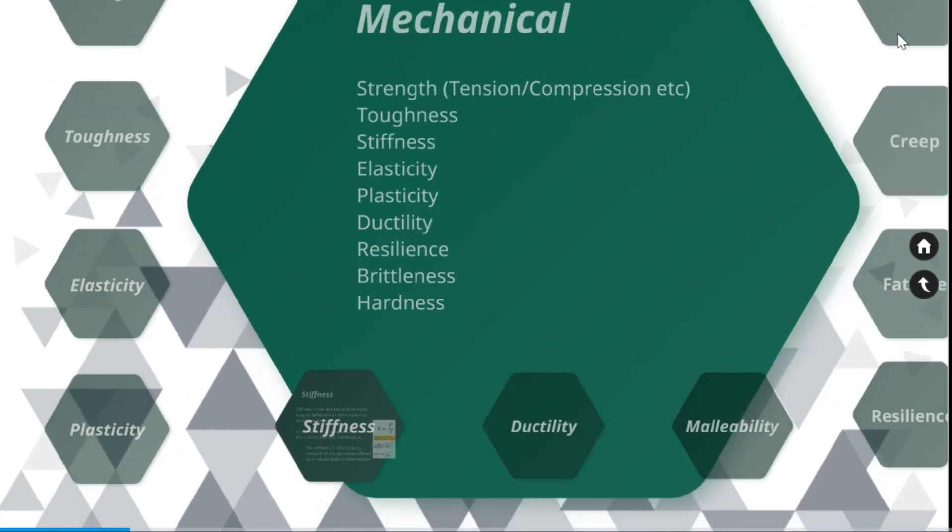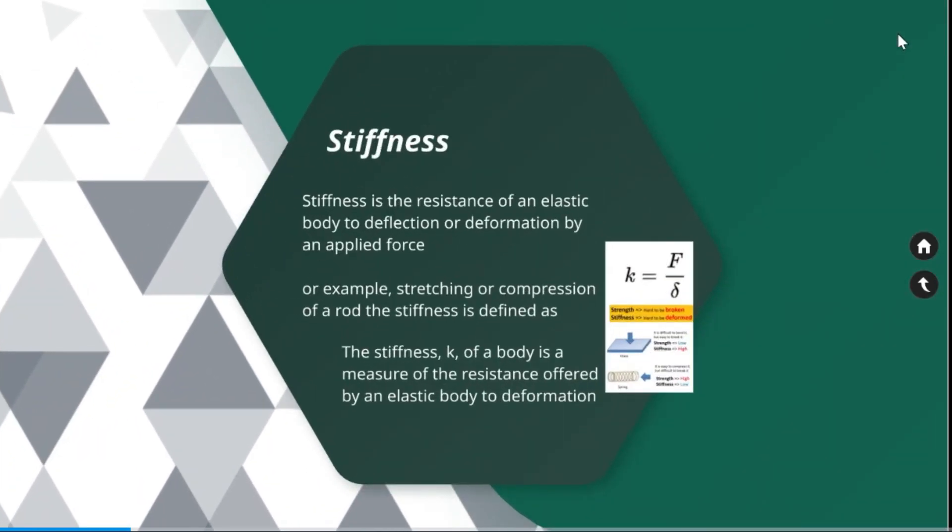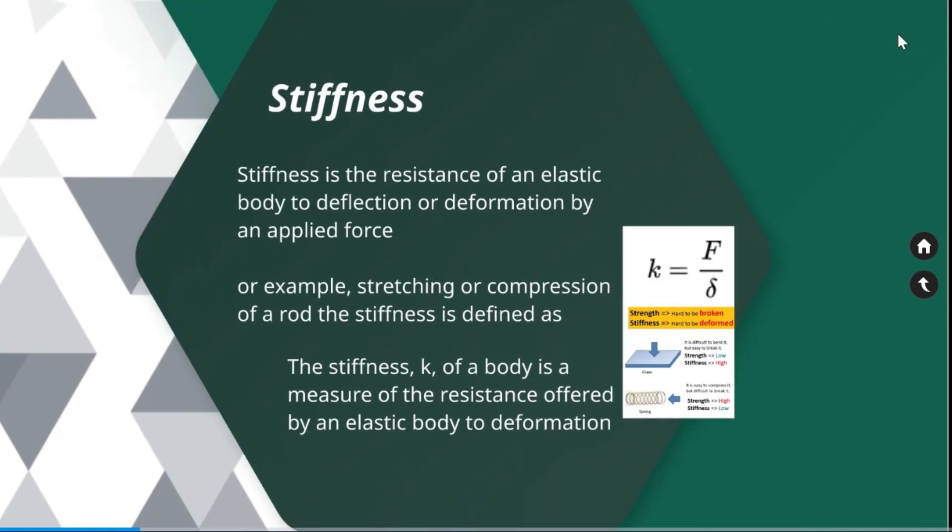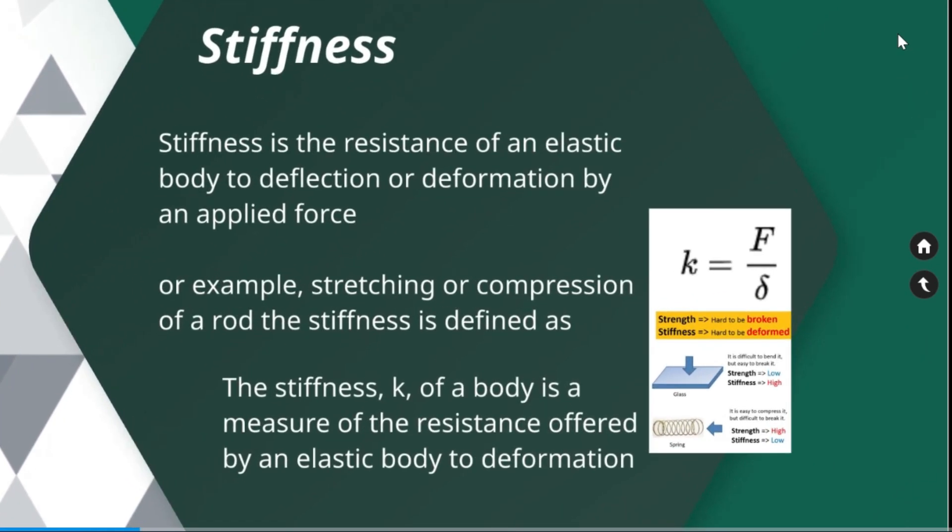Stiffness. Resistance of a material to elastic deformation or deflection is called stiffness or rigidity. For example, while stretching or compressing a rod, the stiffness is defined as K. K is equal to F by delta. F is the applied force and delta is the deflection.